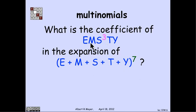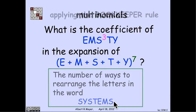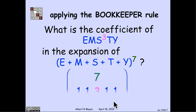In other words, the coefficient of e·m·s³·t·y in this product is the number of ways of rearranging the letters in this sequence of seven. It's the word systems, which is why we chose it to be rememberable. How many ways are there to rearrange the letters in the word systems by the bookkeeper rule? There are seven choose 1, 1, 3, 1, 1.